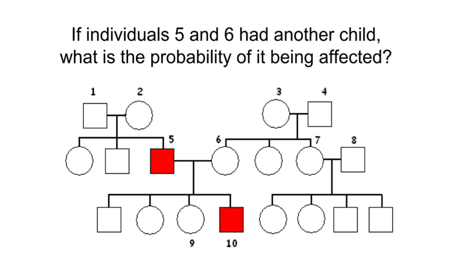Again, if it were a mitochondrial genetic disorder, then the mother of individual number five — individual number two — would have to be affected. Now let's suppose this is a Y-chromosome-linked genetic disorder, and this affected individual passed his Y-chromosome to his son, who is affected. But in that case, he would also pass this defective Y-chromosome to his other son, and that son would also have to be affected. If a male has a defective Y-chromosome, all his male progeny are going to be affected — and this is something we do not see here.